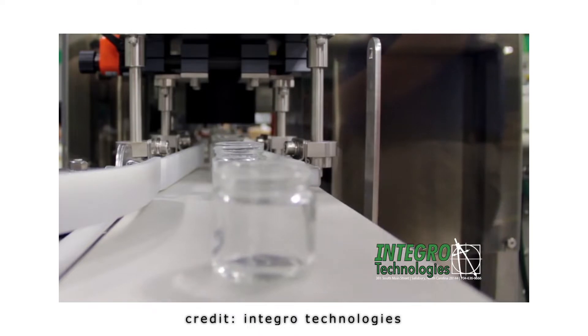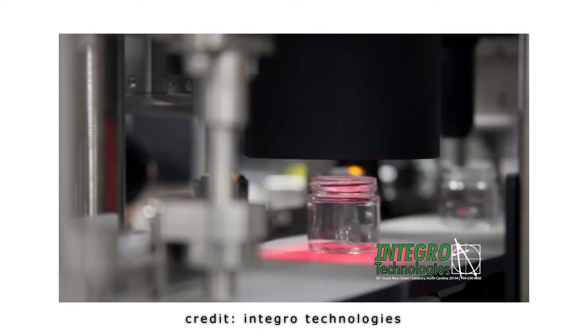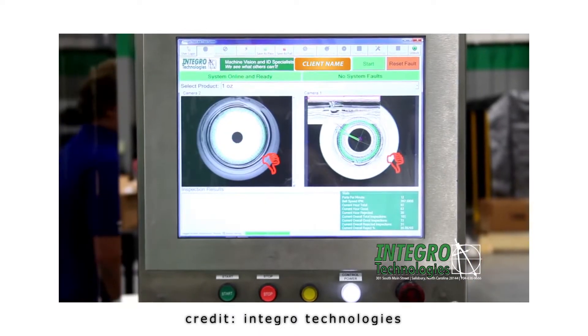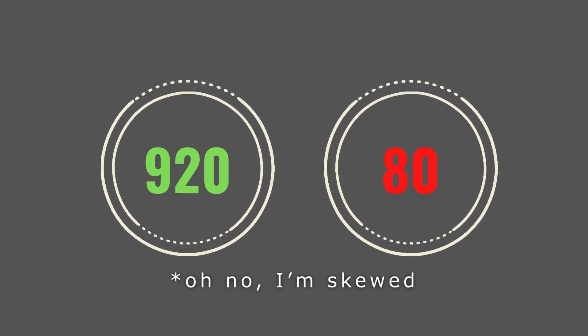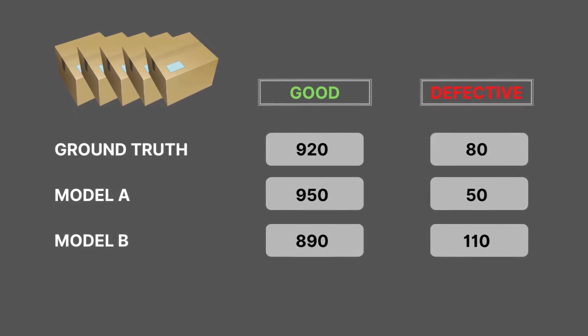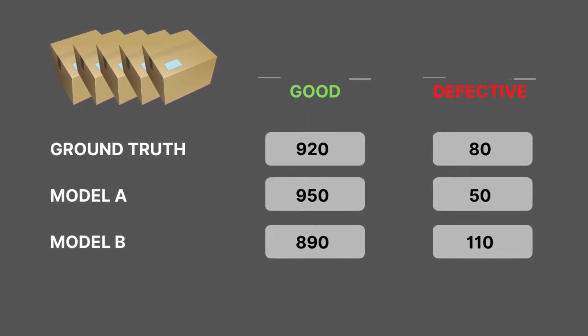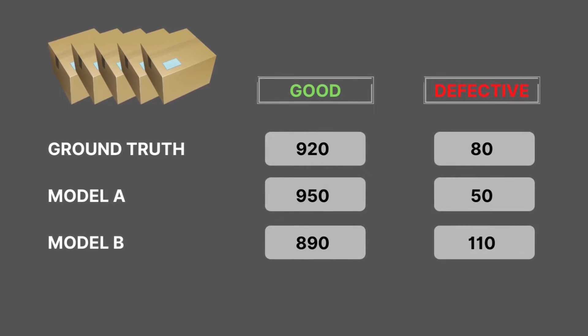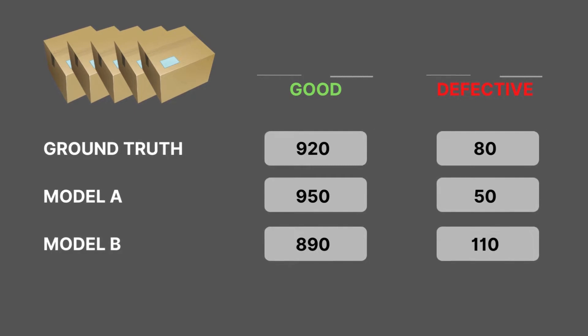You're trying to develop an algorithm that detects manufacturing defects — a defect detection system. Assume you have a ground truth of 920 good products and 80 bad products. You develop two models: Model A classifies 950 products as good and 50 as bad, while Model B predicts 890 good products and 110 bad products.